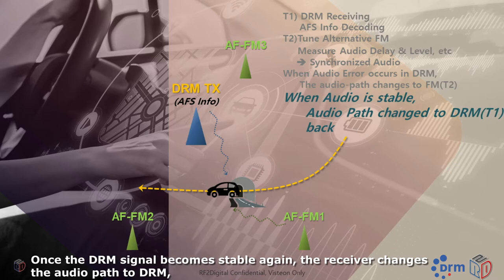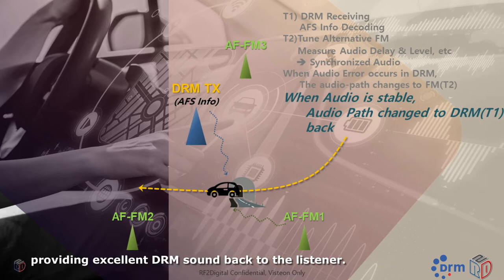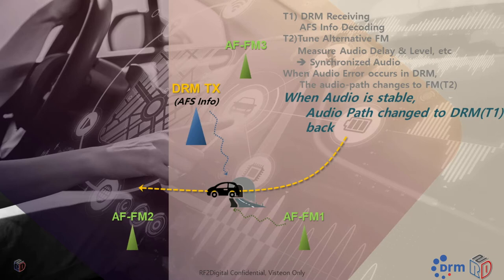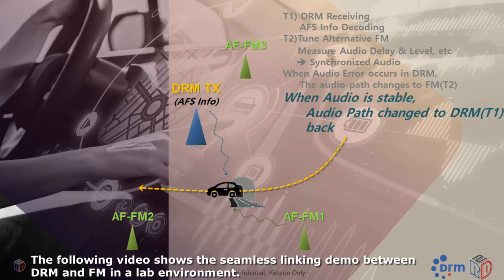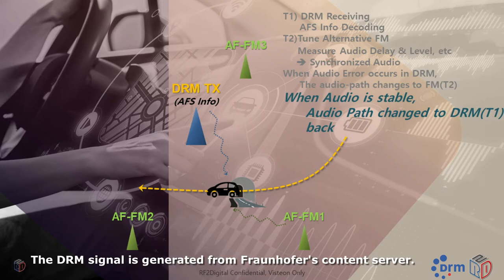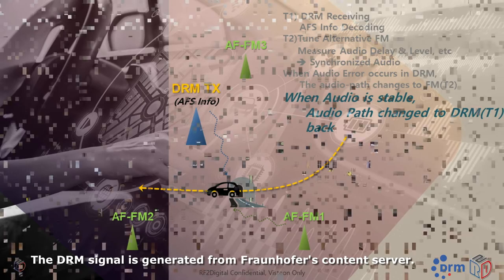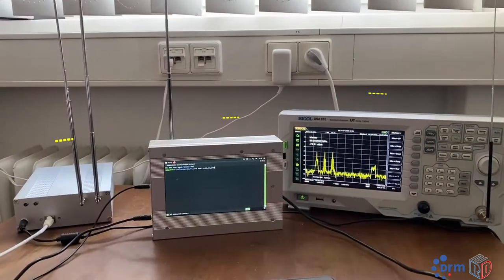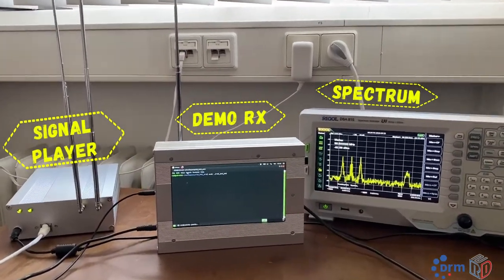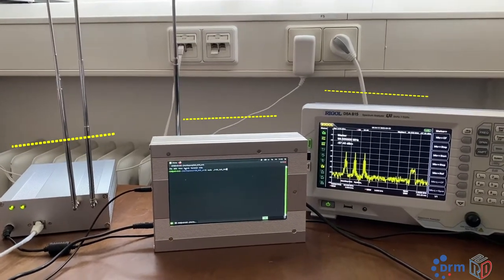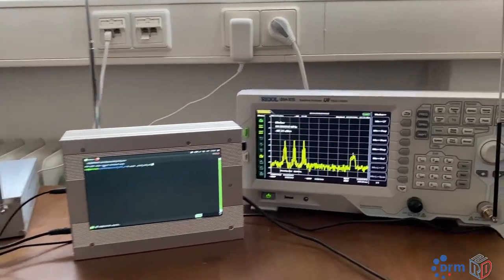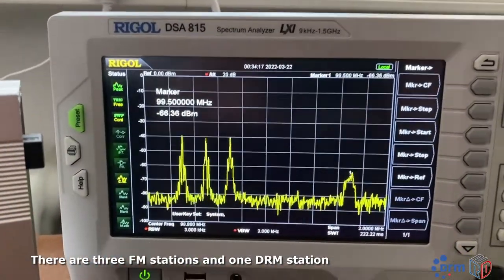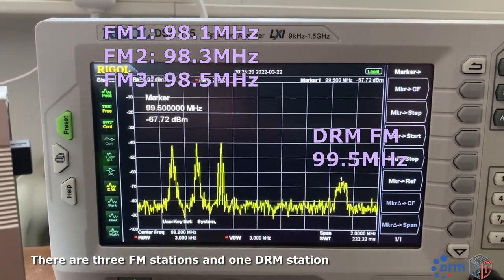Once the DRM signal becomes stable again, the receiver changes the audio path back to DRM, providing excellent DRM sound to the listener. The following video shows the CMC linking demo between DRM and FM in a lab environment. The DRM signal is generated from a Pranopos content server. As you can see, there are three FM stations and one DRM station.